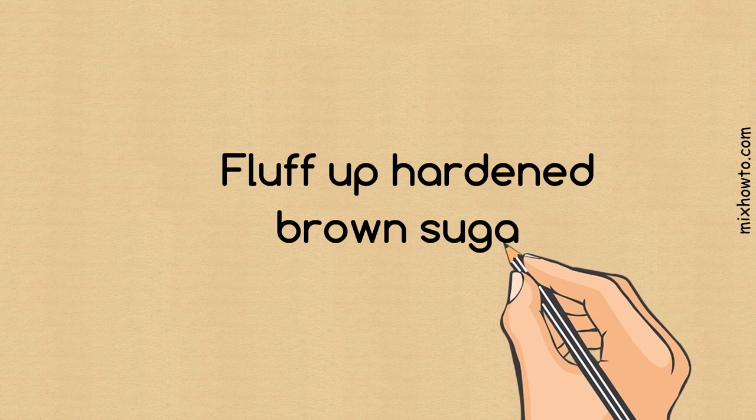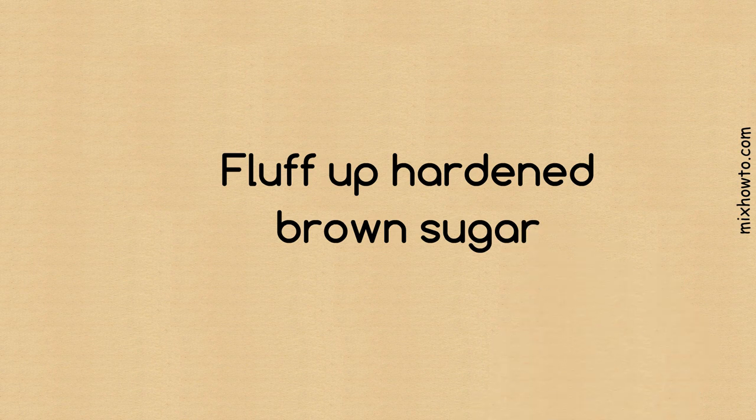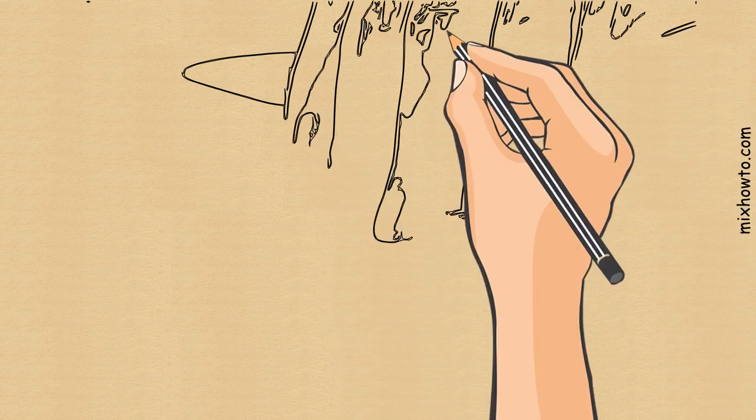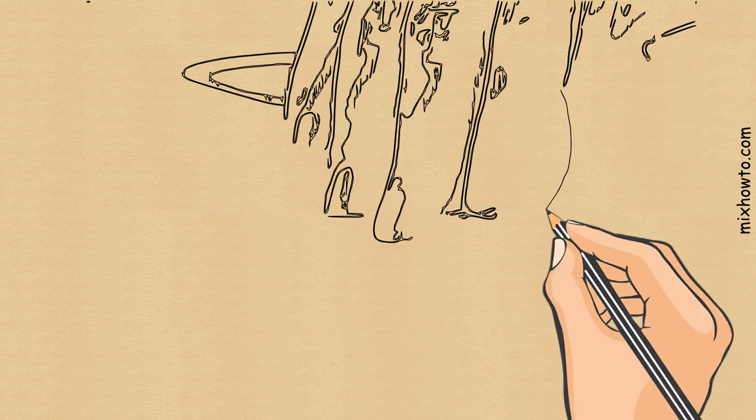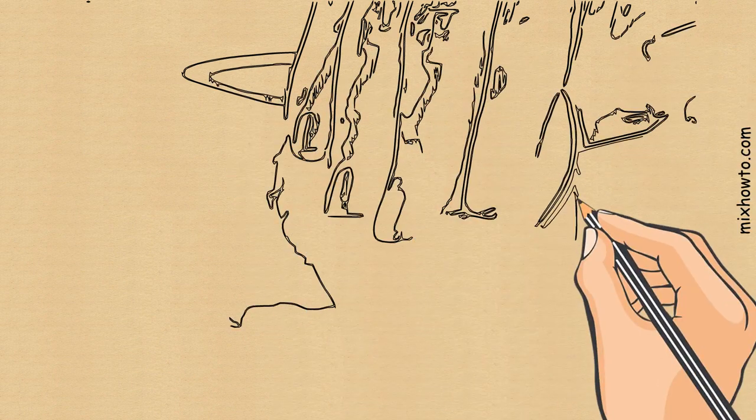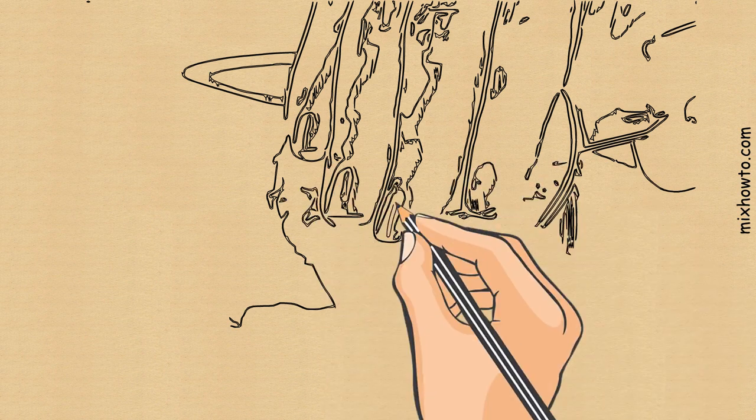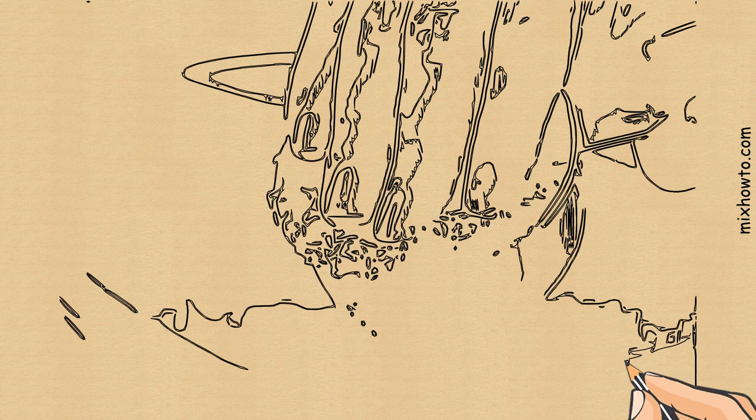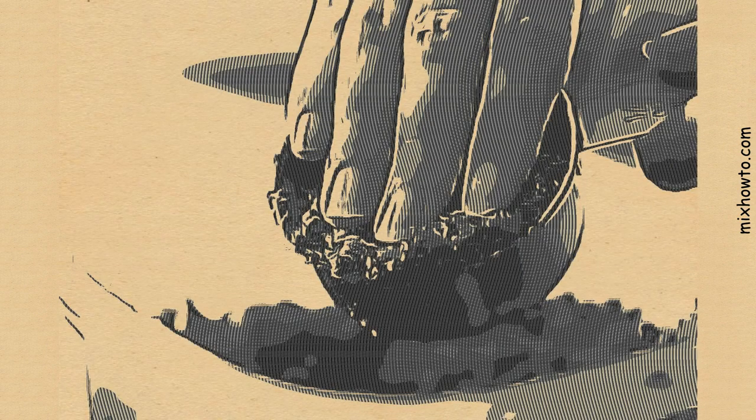Fluff up hardened brown sugar. Brown sugar has an irritating habit of hardening up when exposed to humidity. Fortunately, it doesn't take much to make this a temporary condition. One of the best uses for apples is to soften brown sugar. Simply place an apple wedge in a self-sealing plastic bag with a chunk of hardened brown sugar.